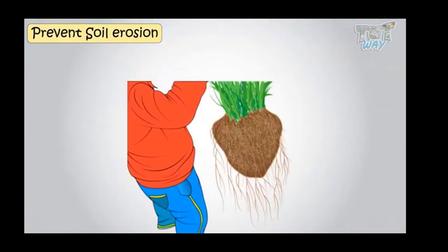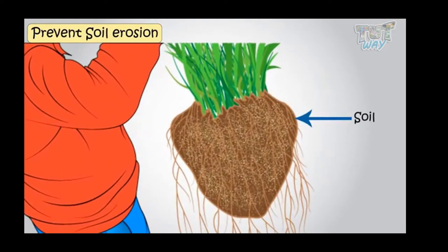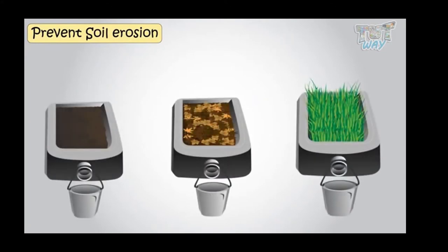Take out a small plant from soil, and what you will see is that the soil too will come along with its roots. Roots hold the soil very firmly. Here we have an activity that shows how roots prevent soil erosion.